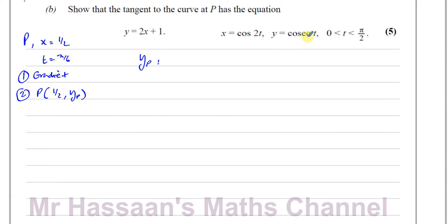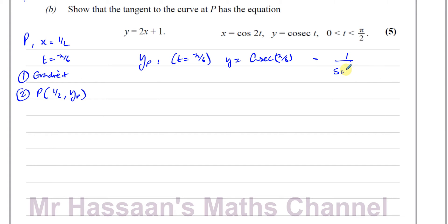The y-value at P: since t = π/6, we substitute into y = cosec(t). Cosec is the reciprocal of sine, so y = 1/sin(π/6). Since π/6 is 30°, sin(30°) = 1/2, so y = 1 ÷ (1/2) = 2. Therefore point P has coordinates (1/2, 2).